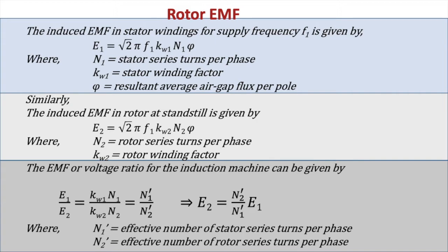The induced EMF in the stator windings for supply frequency f1 is given by E1 = √2 π f1 kw1 N1 φ, where N1 is the stator series turns per phase, kw1 is the stator winding factor, and φ is the resultant average air gap flux per pole. Similarly, the induced EMF in the rotor at standstill is E2 = √2 π f1 kw2 N2 φ. The EMF ratio is E1/E2 = (kw1 N1)/(kw2 N2) = N1'/N2', the ratio of effective turns per phase.